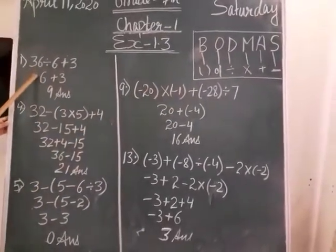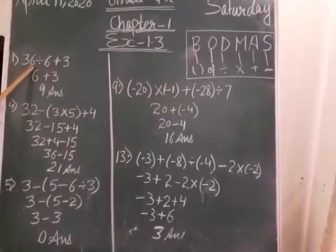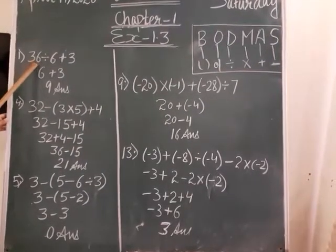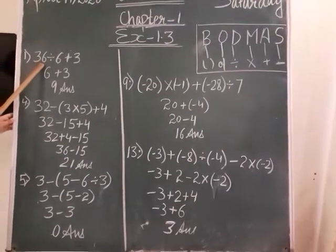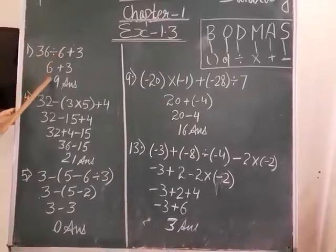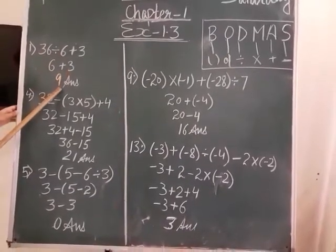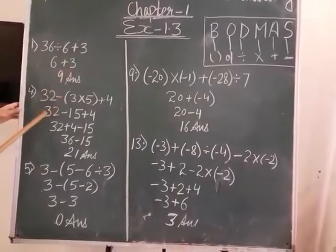Look at the first sum here. There is no bracket, no Of, so we go directly to division. We do division first: 6 divided by 3 gives 2, then 6 plus 3 gives 9. So the answer is 9.